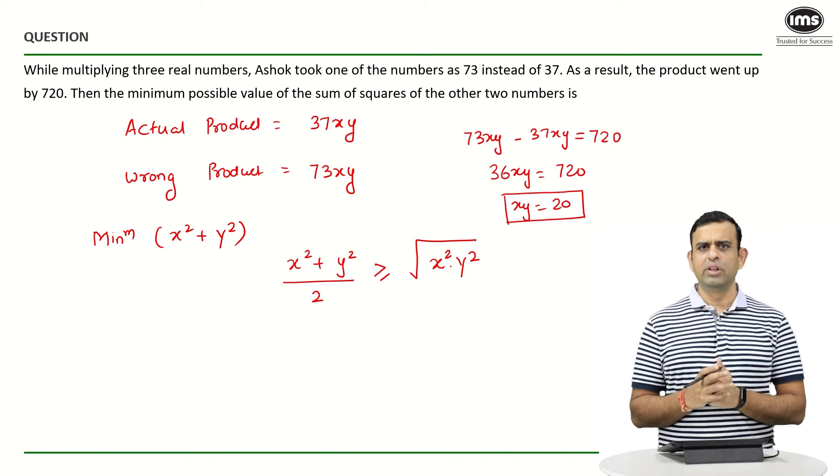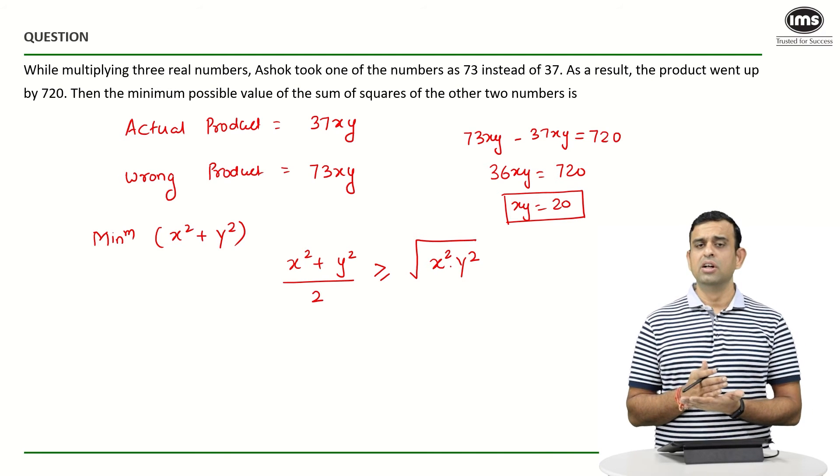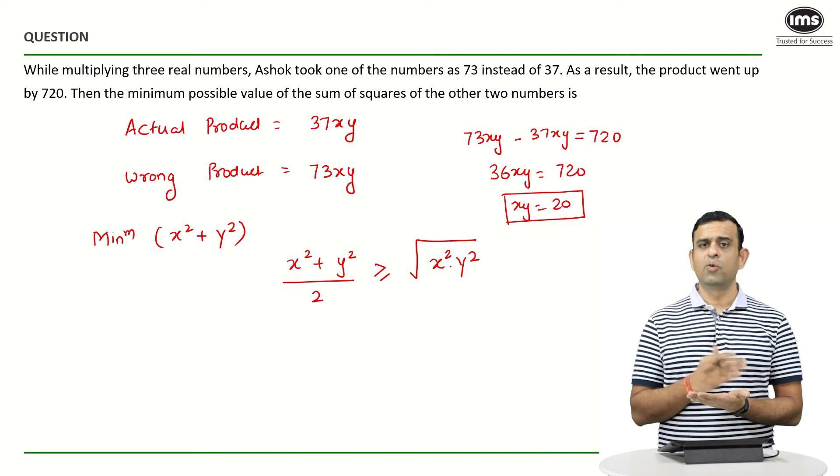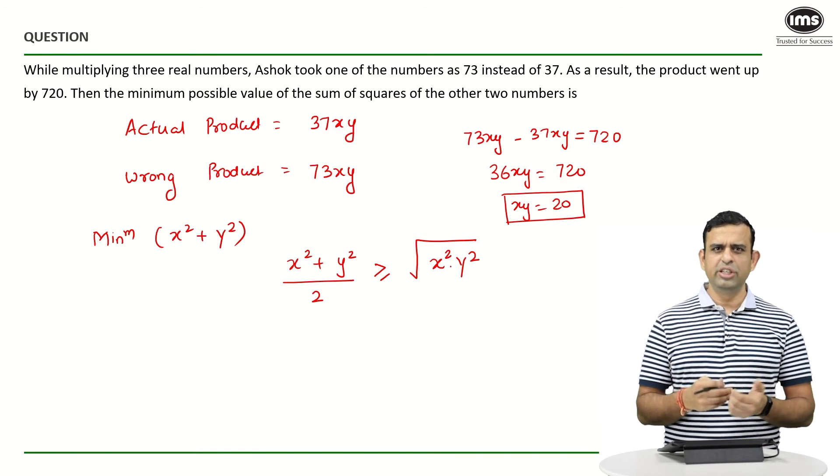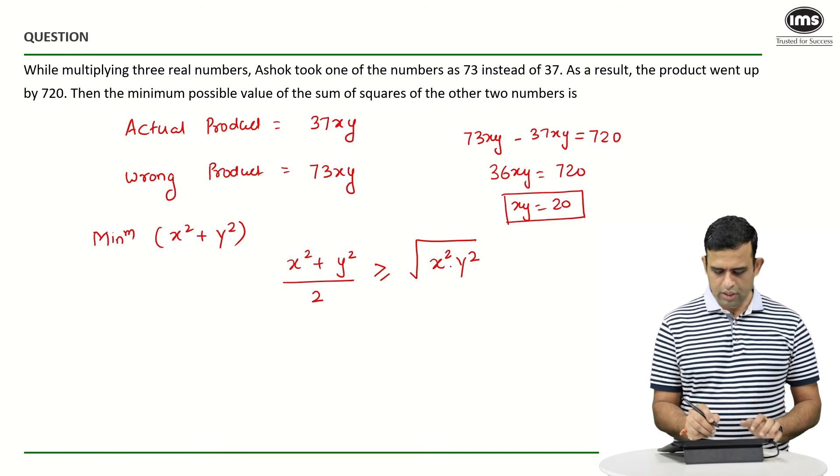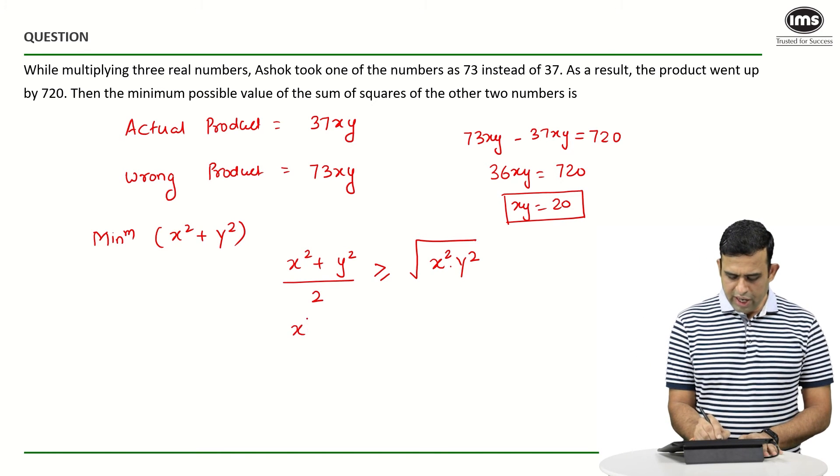And also if you know one thing, whenever the product is constant, the sum is going to be minimum provided both the numbers happen to be equal to each other, which we are going to see using the AM ≥ GM rule as well.